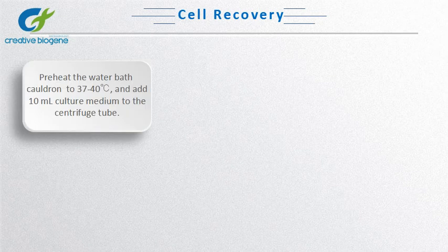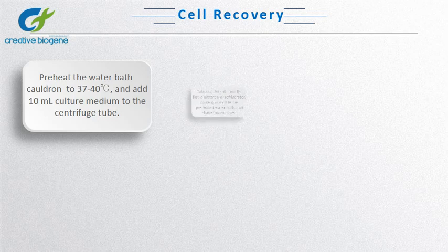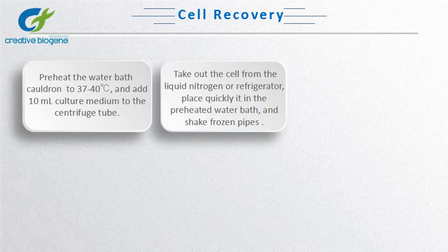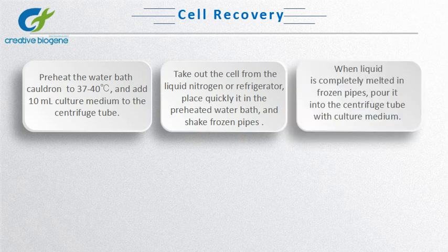Preheat the water bath to around 37 degrees centigrade and add 10 milliliters of culture medium to the centrifuge tube. Take out the cells from the liquid nitrogen or refrigerator, place them quickly in the preheated water bath, and shake the frozen vials to have them uniformly heated. When the liquid is completely melted, pour it into the centrifuge tube with culture medium.